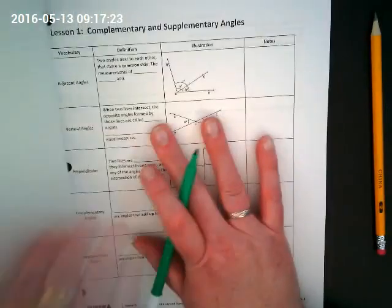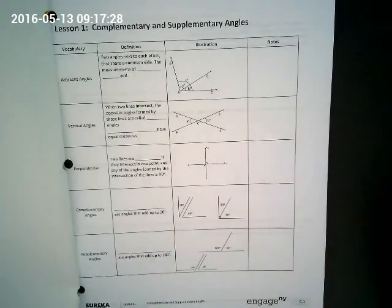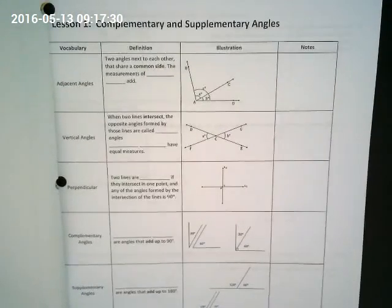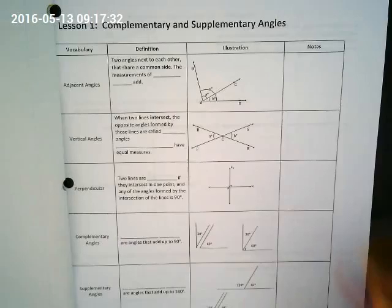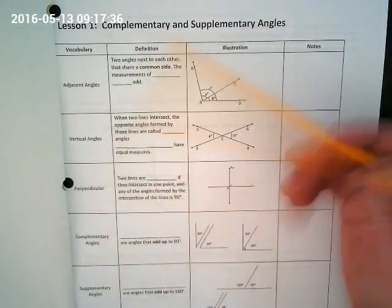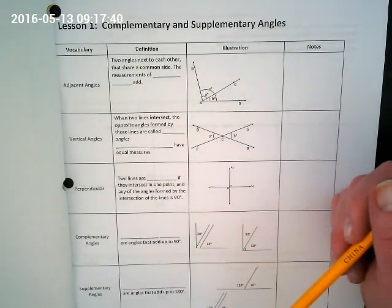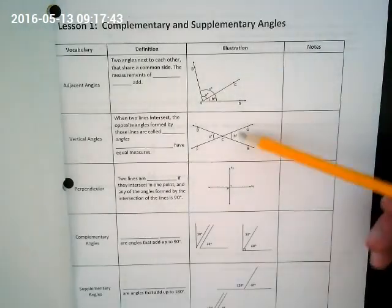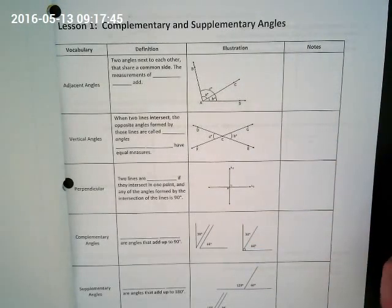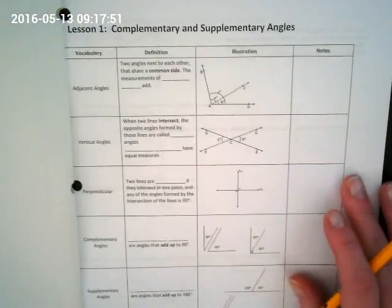And then we're gonna skip past the first page for notes and go straight to some vocabulary that's on page three. I want you to notice how this page is set up. The first column is the vocabulary term. The second column is definition, and we're going to be filling in the blank with the vocabulary term. We have an illustration because geometry is a very visual part of math, and there's a place for notes that you're going to be putting in your own words.